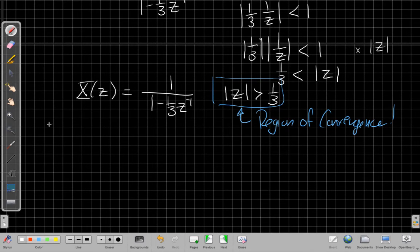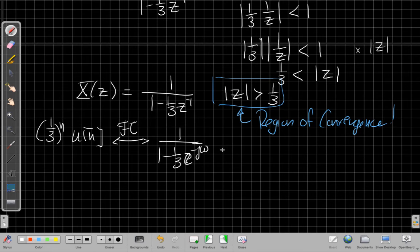The Fourier transform would be 1/(1 - 1/3 e^(-jω)). Well, if I set Z equal to e^(jω), that's what we'll get here. So that's consistent with what we saw in the previous video, that the Z-transform evaluated at Z = e^(jω) gives me the Fourier transform.